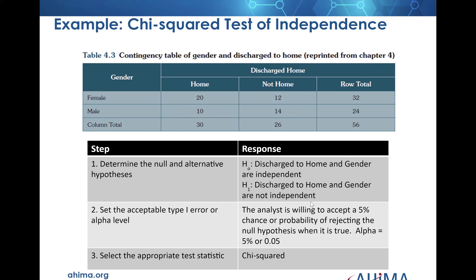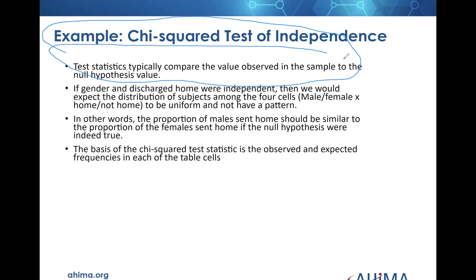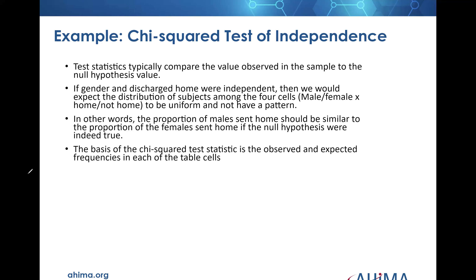And then the way we're going to do that is with chi-squared. What's important in this slide is that we're comparing the value observed in the sample to the null hypothesis value — that's what chi-squared does. If the gender and discharged home were independent, we would expect that the distribution of the four cells — male, female, versus home, not home — would be uniform and not have a pattern.